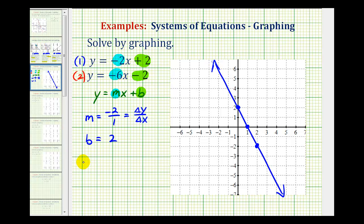And now for the second line, the red line, we have a slope of negative six, or negative six over one, and a Y-intercept of negative two.